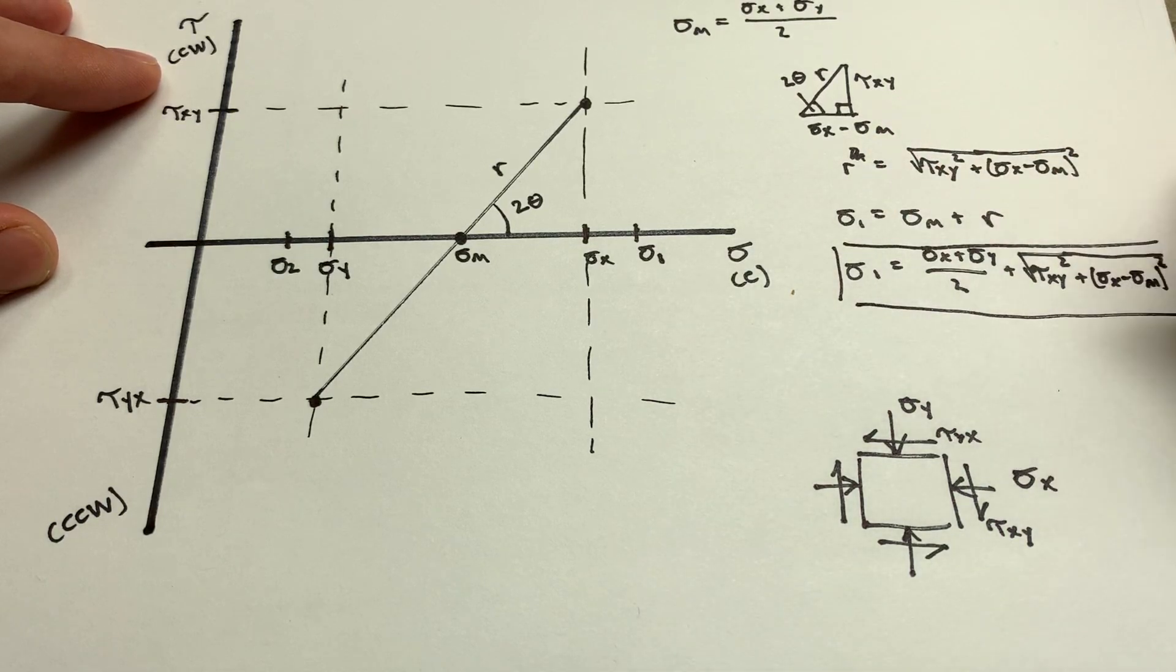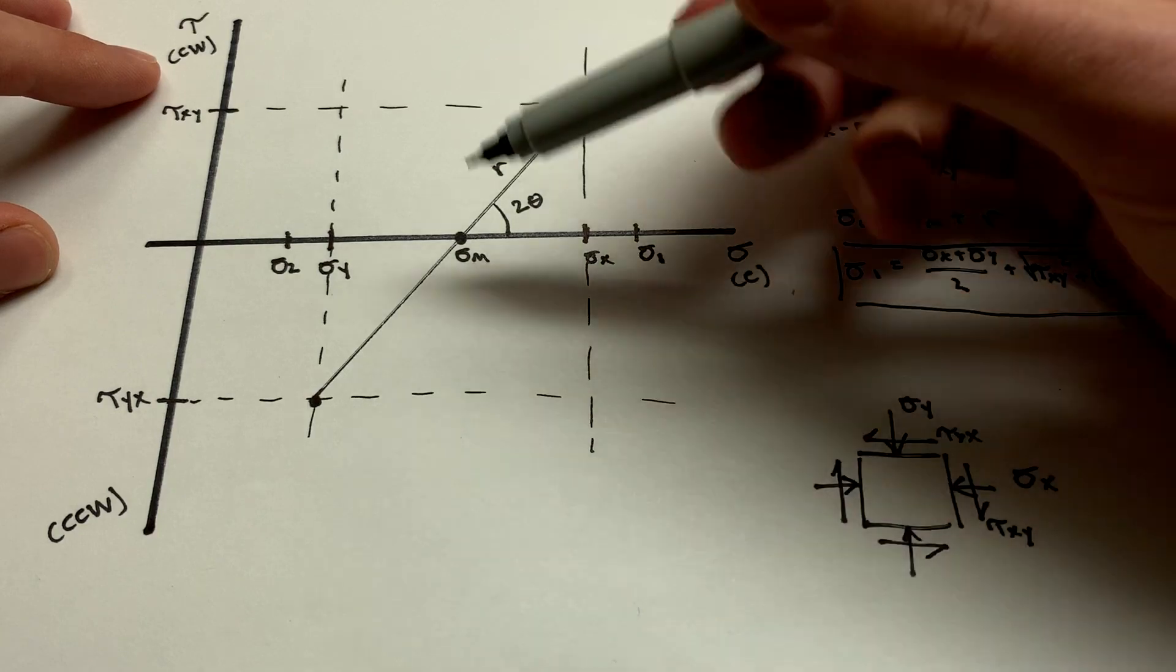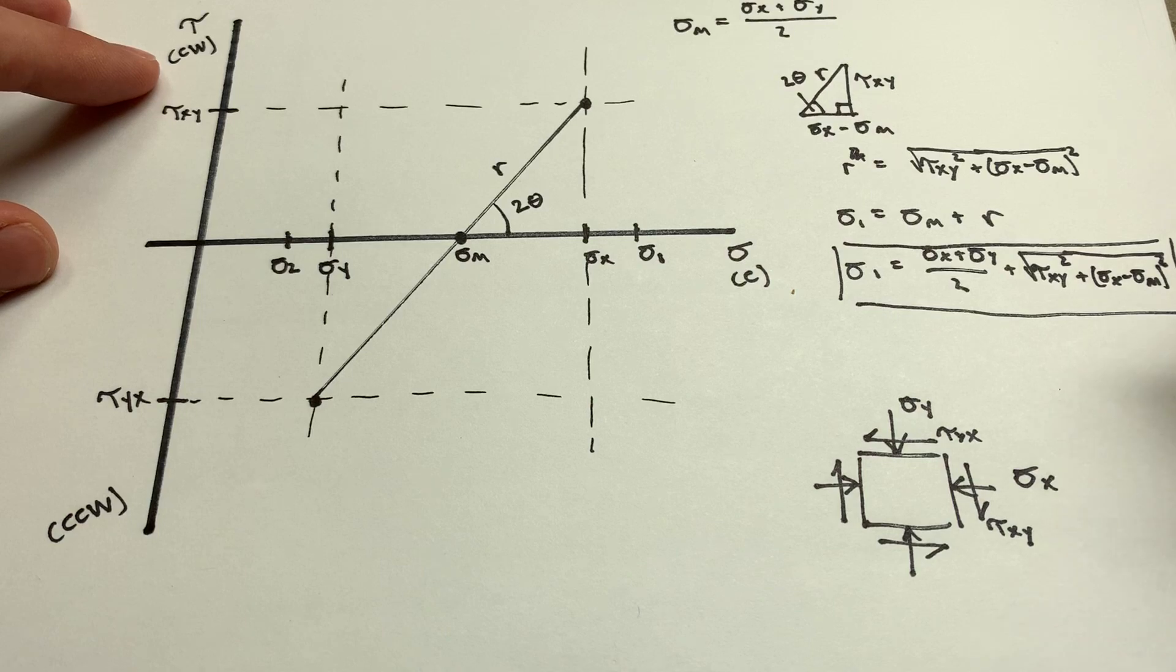Sigma 2, you can imagine, is going to be the same thing. Just subtract this value from this value instead. We're going the same distance back because it's a circle. It's going to have the same radius. We just have to worry about, instead, we're moving backwards.